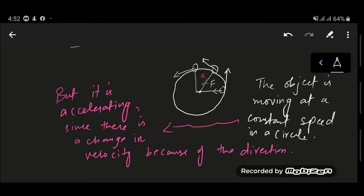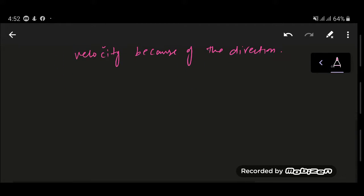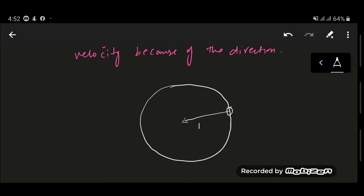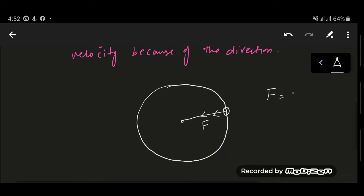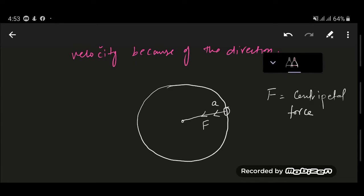The force is also towards the center of the circle — this is very important. The force is always towards the center of the circle, and this force is also known as the centripetal force. The acceleration is also towards the center of the circle. Your question would be: why is the acceleration towards the center, although the velocity is at the tangent to the circle at every point?